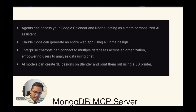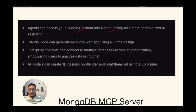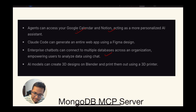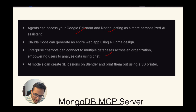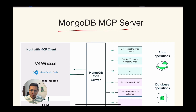Agents can access your Google Calendar and Notion, acting as more personalized AI assistants. Claude Code can generate an entire web page using a Figma design — that's how powerful it is. Enterprise chatbots can connect to multiple databases across an organization, empowering you to analyze data. AI models can even create 3D designs in Blender. This is the power of MCP, and in this video we'll focus on MongoDB MCP.